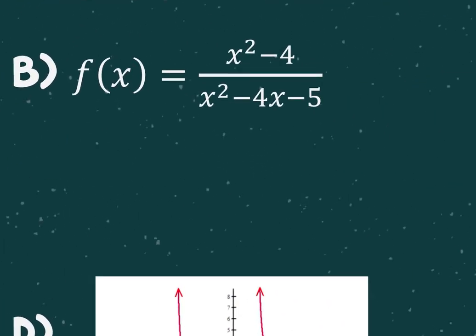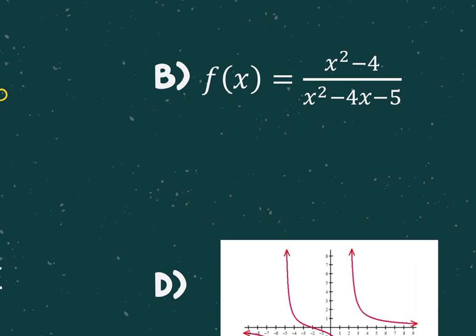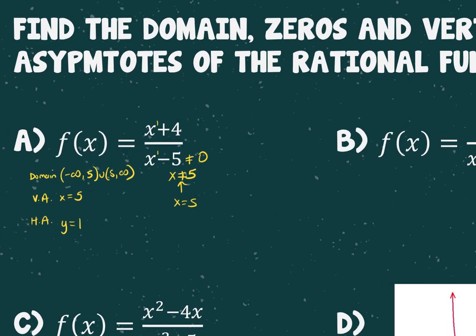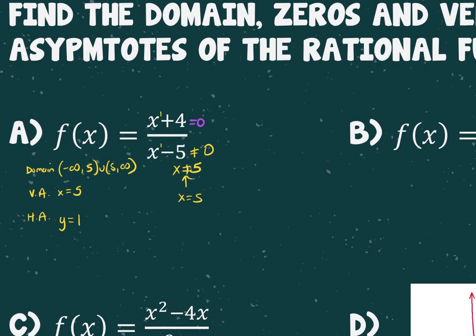I did horizontal asymptote instead of zeros — sorry. Zeros come from my numerator. So my zero is x equals negative four.